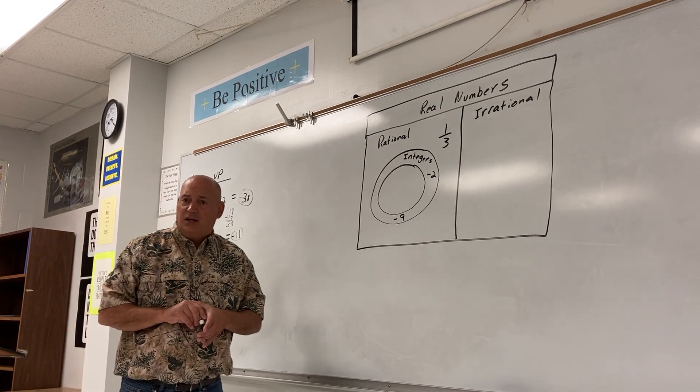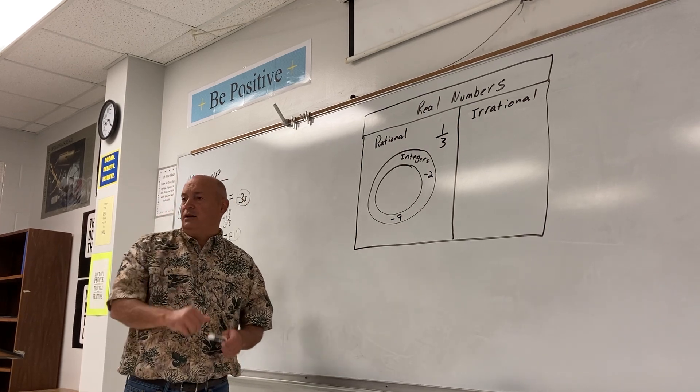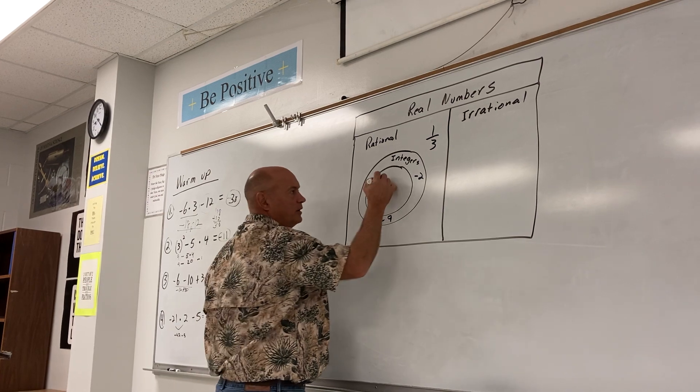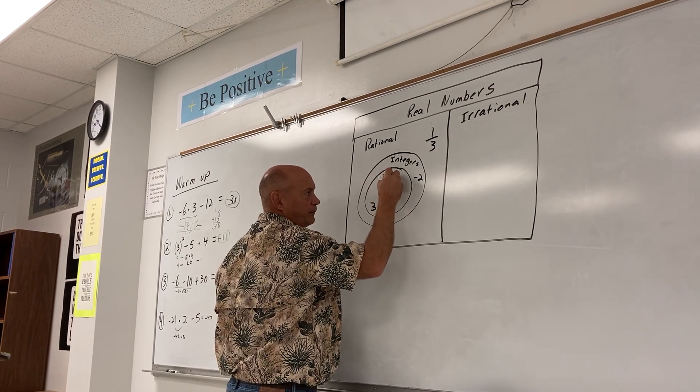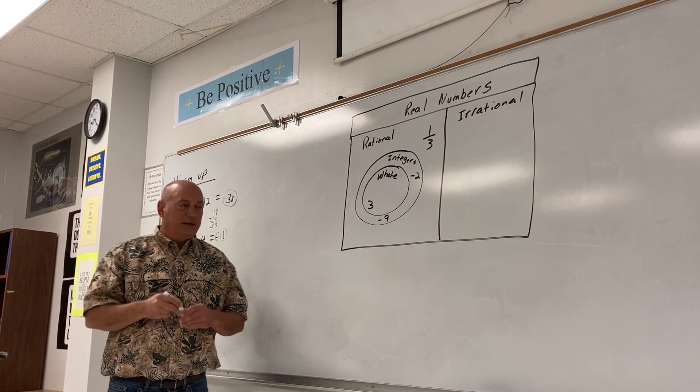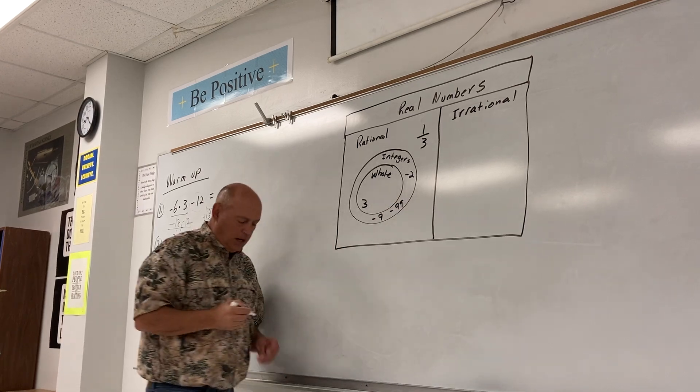Emma? Six over two. Six over two is? Three. That actually goes in this box right here. We're going to call those whole numbers. Are you with me? Give me one more. Negative ninety-nine. Negative ninety-nine would go in the integer column.